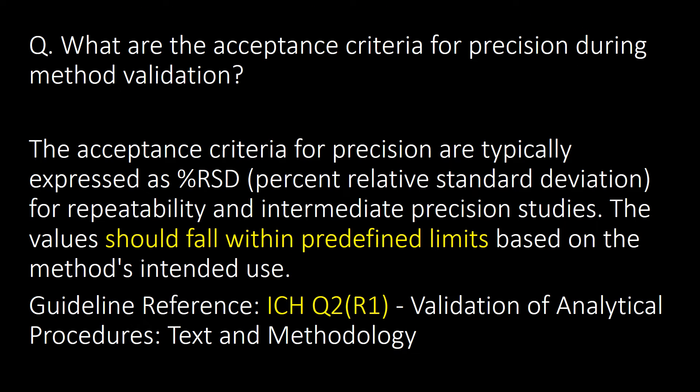What are the acceptance criteria for precision during method validation? The acceptance criteria for precision are typically expressed in %RSD (percent Relative Standard Deviation) for repeatability and intermediate precision results. The values should fall within the predefined limits based on the method's intended use. Guideline reference: ICH Q2.